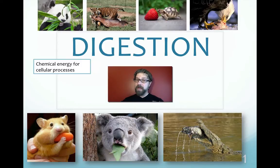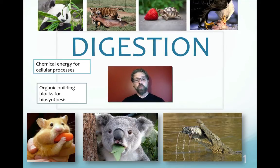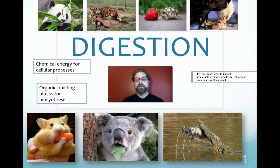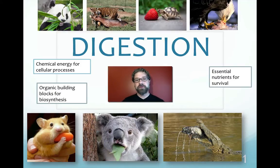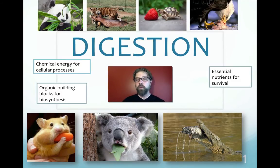Number one, since we've covered cellular respiration, we know that chemical energy for cellular processes is required. We also need organic building blocks for biosynthesis, because as we break down and recycle older cellular components, we need to replenish them. And lastly, essential nutrients for survival — we need trace elements and trace minerals to stay healthy.